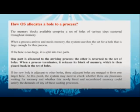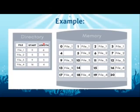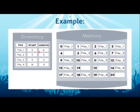Let's go through an example for continuous allocation. Assume there is a directory with three entries. The disk has blocks described like this: File 1 starts at block zero and has a length of four, so it occupies blocks zero, one, two, three. File 2 starts at location five and has a length of three, occupying blocks five, six, seven. File 3 starts at block nine and has a length of five, occupying blocks nine through thirteen.